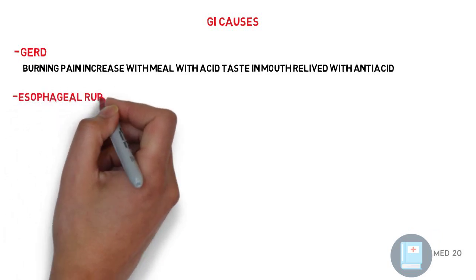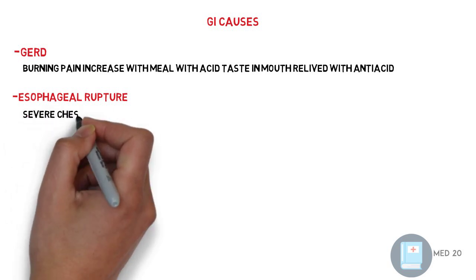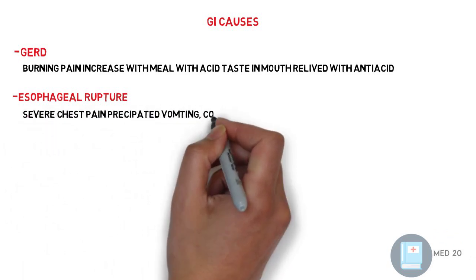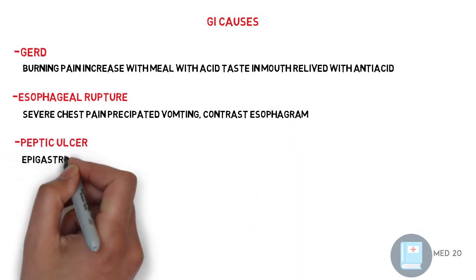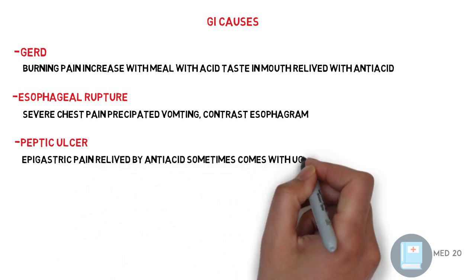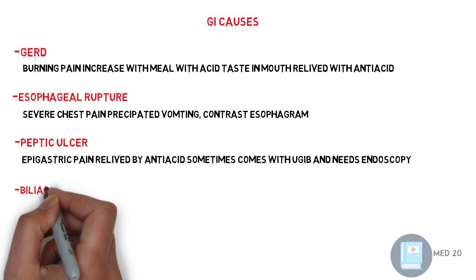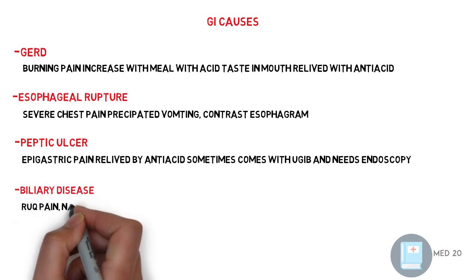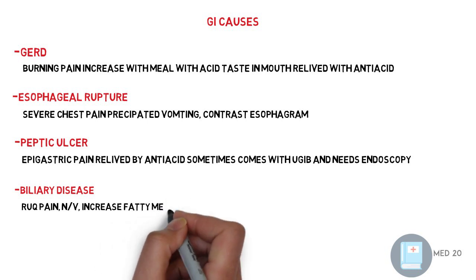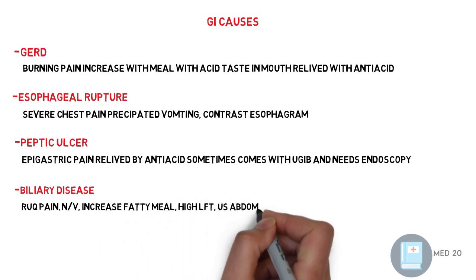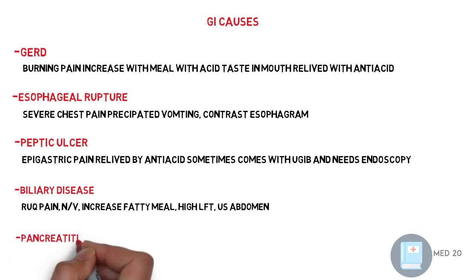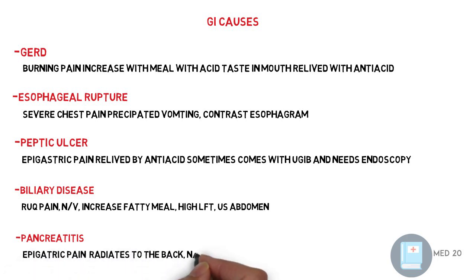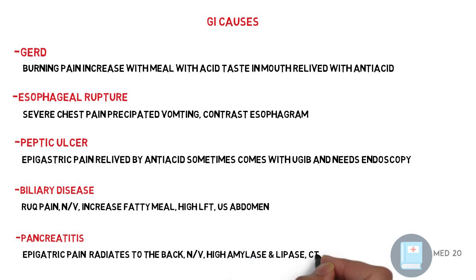Esophageal rupture is severe chest pain, precipitated usually by vomiting, and is diagnosed through contrast esophagogram or CT. Peptic ulcer is epigastric pain, relieved by antacids, and sometimes comes with upper GI bleeding, requiring endoscopy. Biliary diseases present with right upper quadrant pain, nausea and vomiting, increased with fatty meals, elevated LFT and alkaline phosphatase, diagnosed by abdominal ultrasound. Pancreatitis is epigastric pain radiating to the back, with nausea, vomiting, high amylase and lipase, diagnosed with CT abdomen.